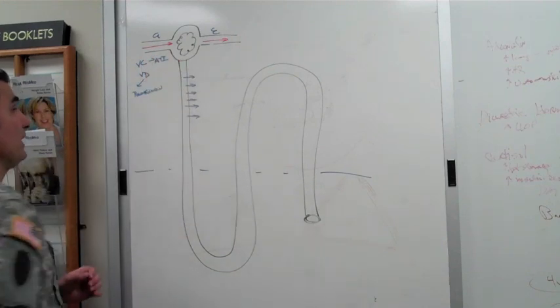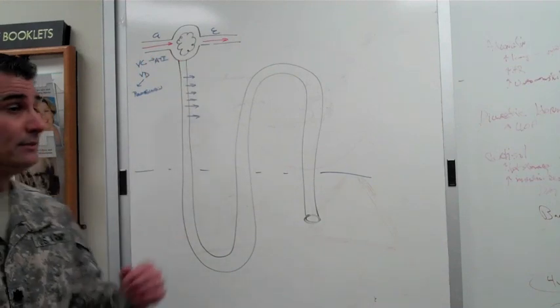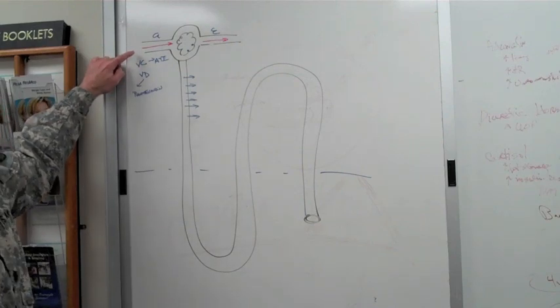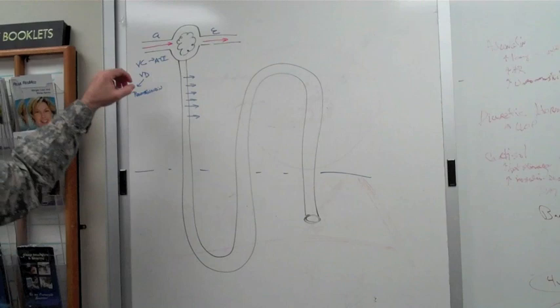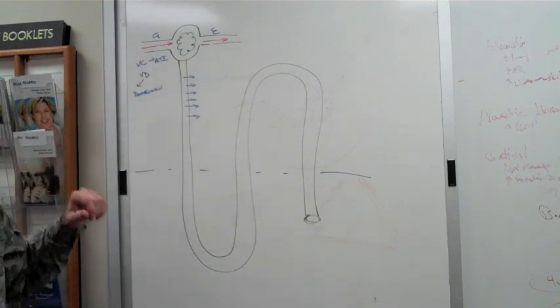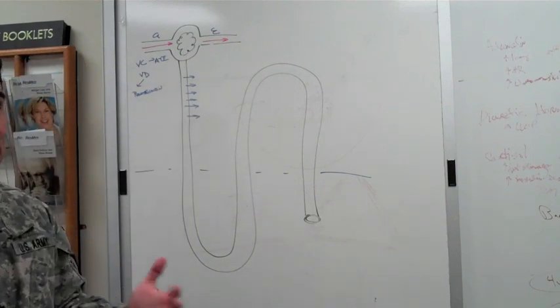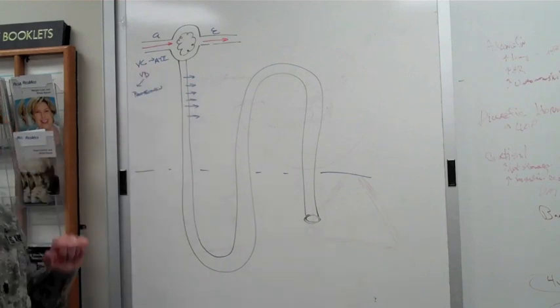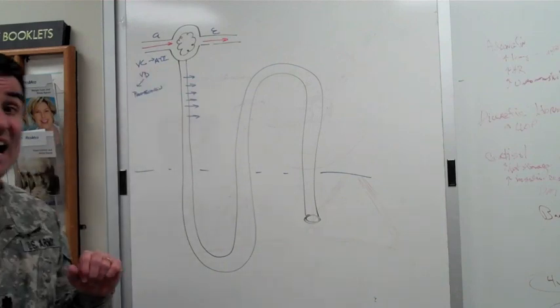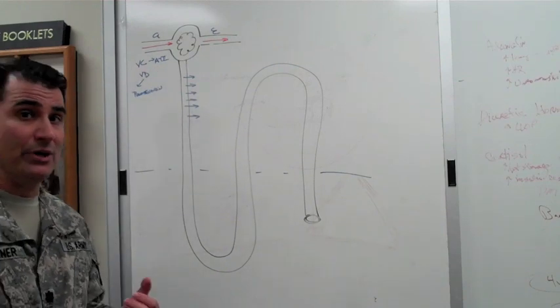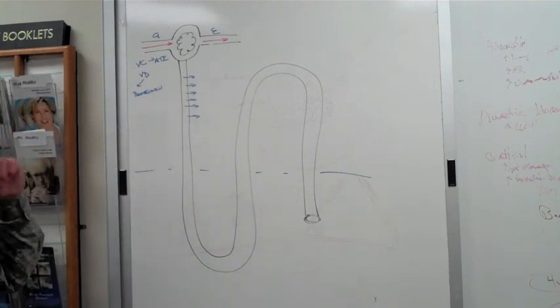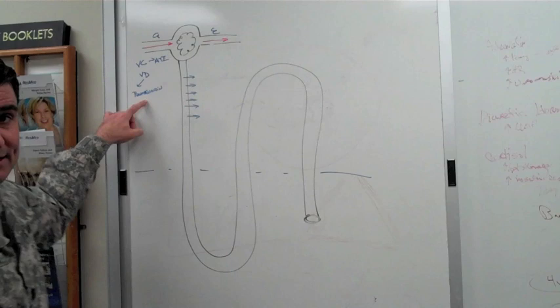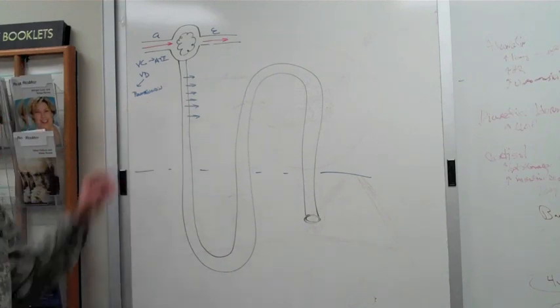When you get volume depleted, angiotensin 2 works at the level of the arteriole to vasoconstrict so that you preserve water and salt to establish your vascular volume. Angiotensin 2, as you know, is down the pathway from renin, from the renin system, and we're going to talk about that later.